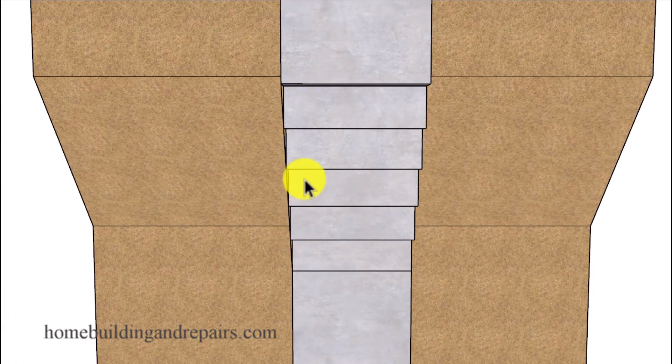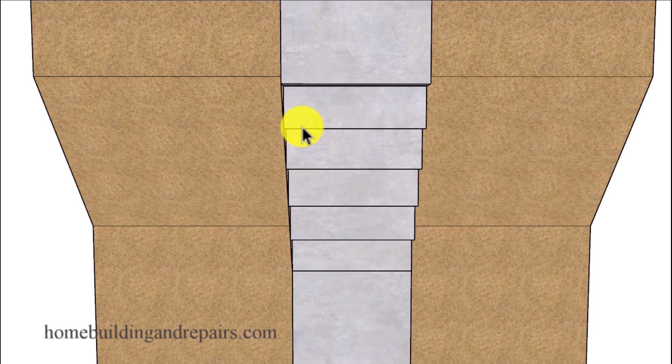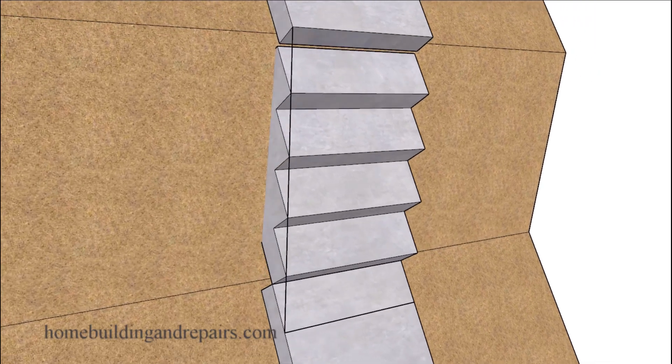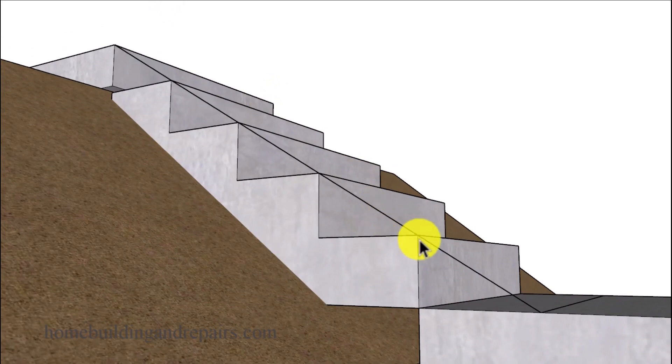If each one of the treads is 11 inches in depth, just simply extend the string line 11 inches on the bottom to create a string line that you will be able to use to lay out each one of your steps.